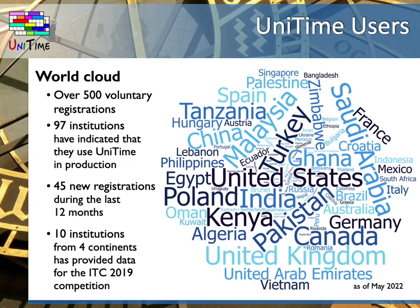Because Unitime is available for download and use for free, we have only a limited knowledge about our users. There are about a dozen of them that we work with regularly, but from the rest we may only get occasional email questions or even no message at all. However, we do have a voluntary registration in Unitime that the admin can fill in once the system is installed or at a later date. These registrations have been used to create this word cloud. It is over 500 registrations from around the world. Out of these registrations, close to a hundred institutions have indicated that they use Unitime in production. During the last 12 months, we have got about 45 new registrations, seven of which have indicated that they use Unitime in production.